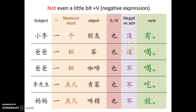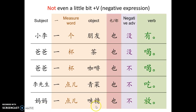没 and 不 actually make a little bit of difference in those two sentences. 李先生一杯茶也不吃 — so Mr. Lee does not eat not even a little bit of the green vegetable. 妈妈一点味精也不放 — so 妈妈 does not put even a little bit of MSG; means not put MSG at all.